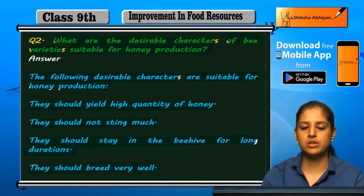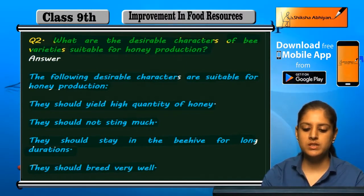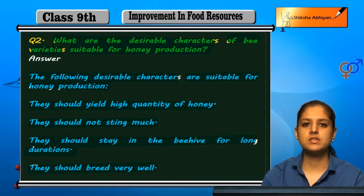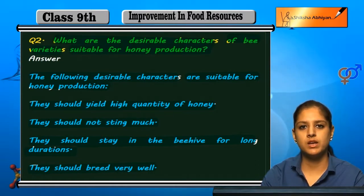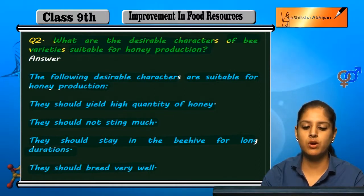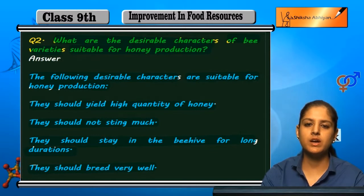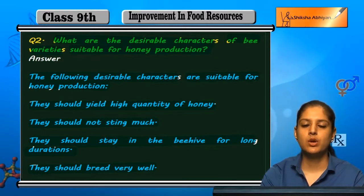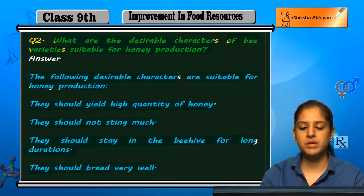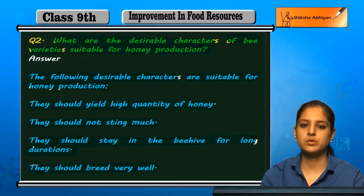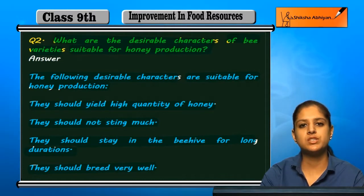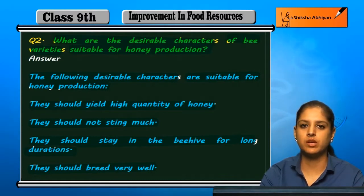With all these characteristics, honey production is affected. An ideal bee variety should have all these characters, which results in very good quality honey production.